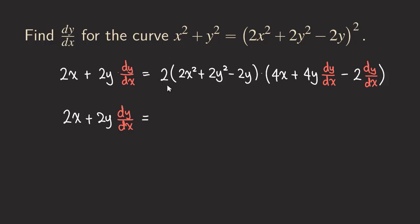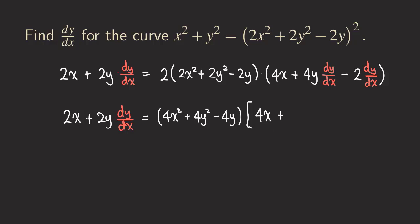On the left side, just copy as-is: we have 2x + 2y · dy/dx. On the right side, we distribute the 2 inside to get 4x² + 4y² − 4y. Then for the dy/dx terms, we factor out dy/dx from the relevant terms, leaving 4x as a standalone term, plus (4y − 2) · dy/dx.